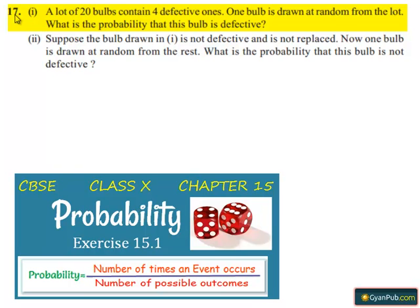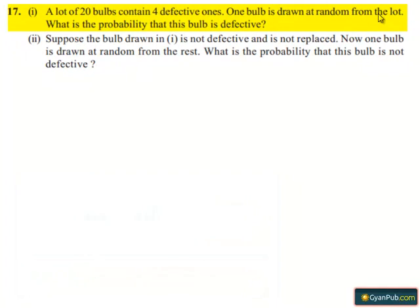Coming to question number 17, first bit: a lot of 20 bulbs contains 4 defective ones. One bulb is drawn at random from the lot. What is the probability that this bulb is defective?